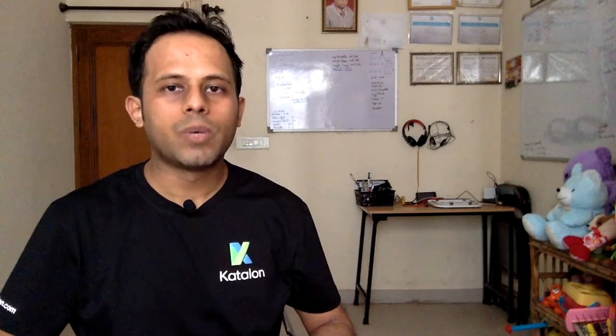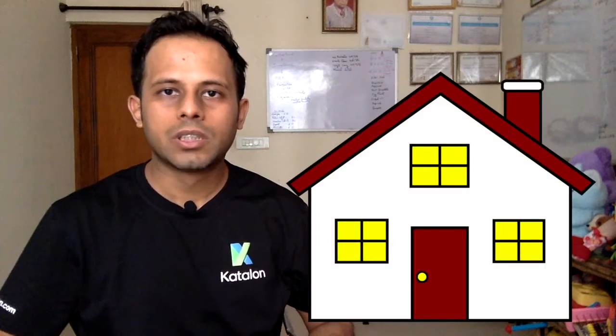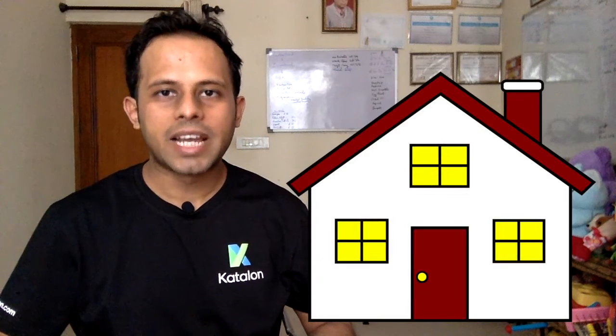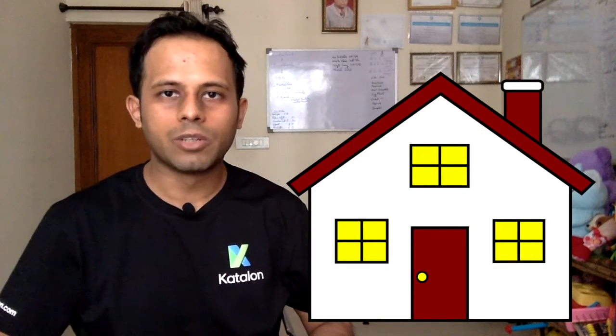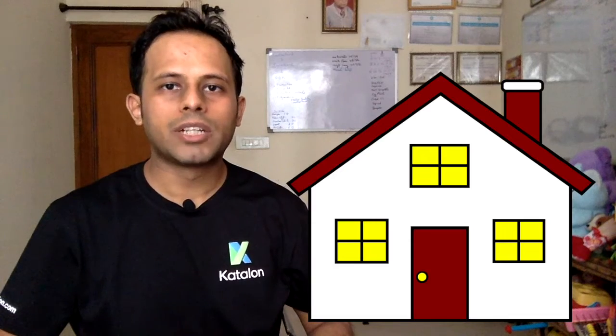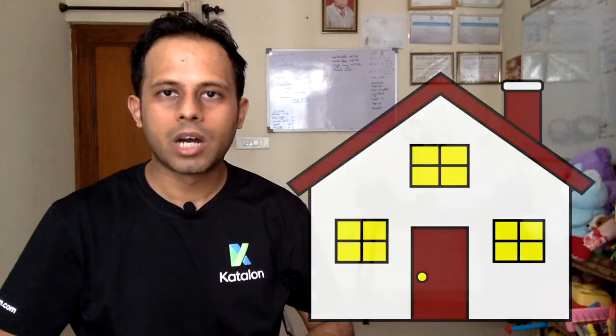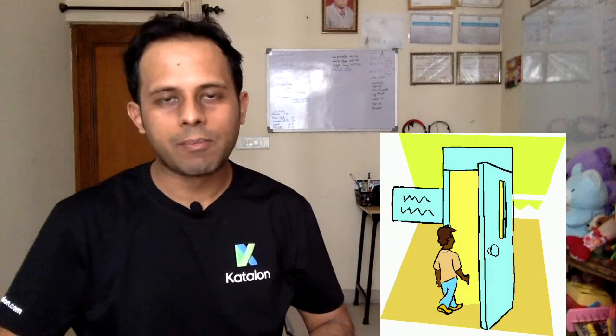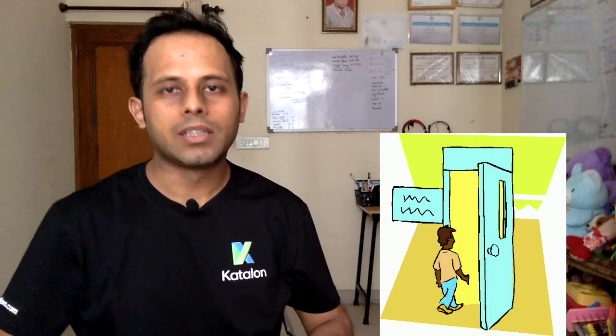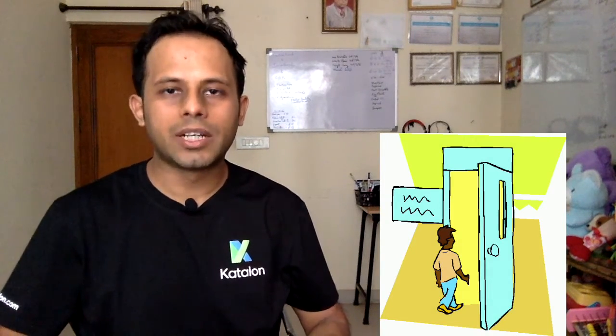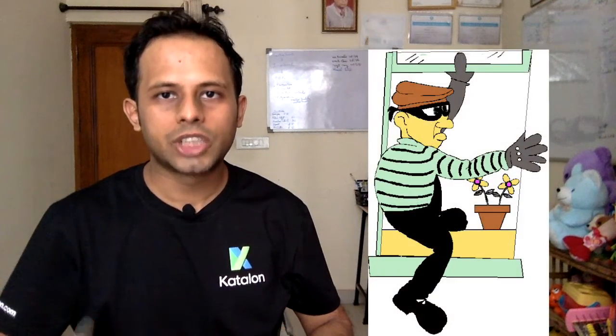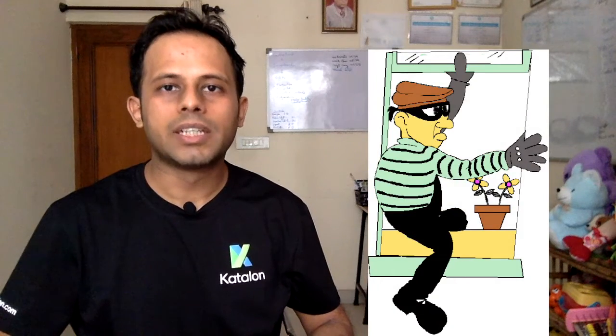Let us understand this in a very easy way. Suppose you build your house. Your house will have multiple entry points — some doors and windows and so on — and these are important to let you in and out of the house. However, you want that only the people of your family, your friends, or in other words, only people who are authorized should enter your house. So you want to check what are the security weaknesses of the entry and exit systems of your house and what are the possibilities of somebody breaking in.